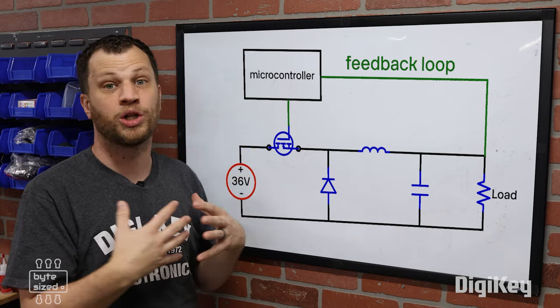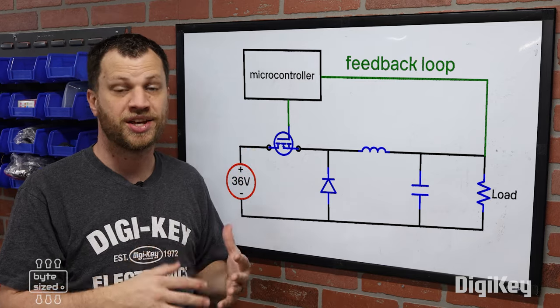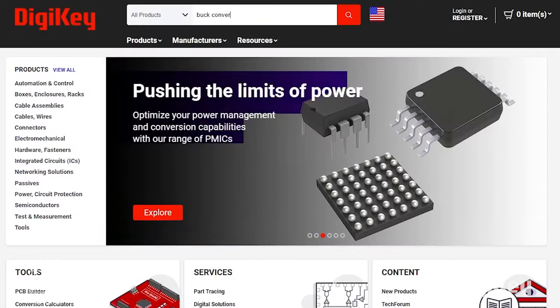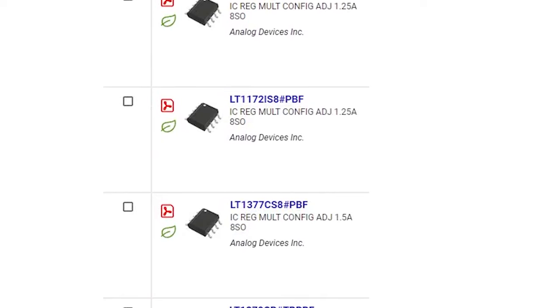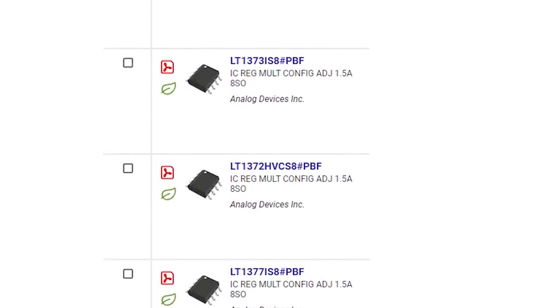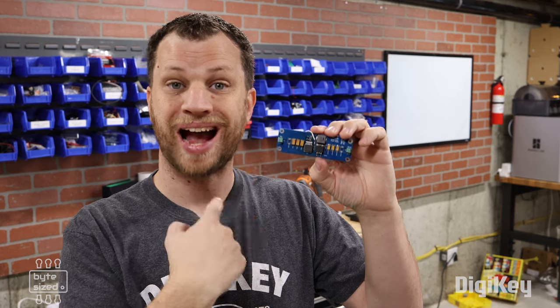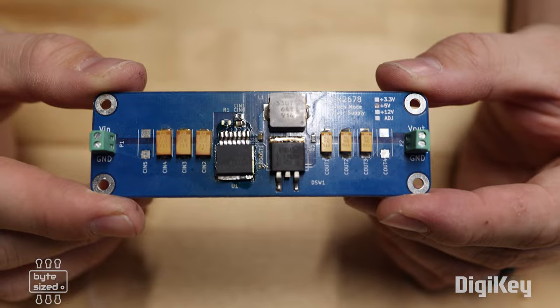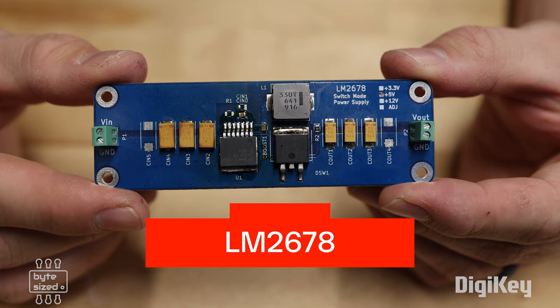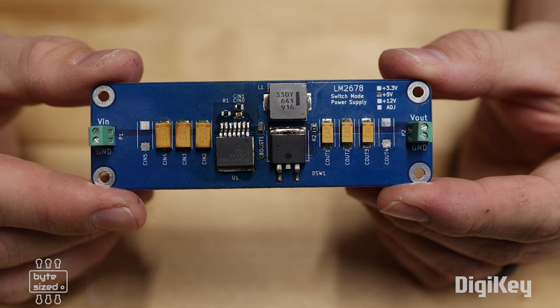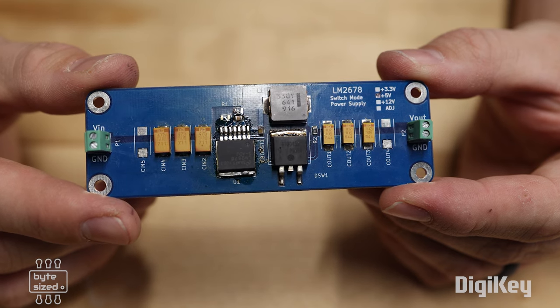It may seem like this is a lot of work to include in your circuit, but the reality is chip manufacturers have already done all of the hard work. If you go on the Digikey website and search buck converter, you'll find hundreds of chips that are ready to use with just one or two additional components. In fact, here is a circuit board that I designed using an LM2678 buck converter. It takes an input voltage from 8 volts up to 40 volts and will output a fixed voltage. You can also get the version of the chip that has an adjustable output voltage.